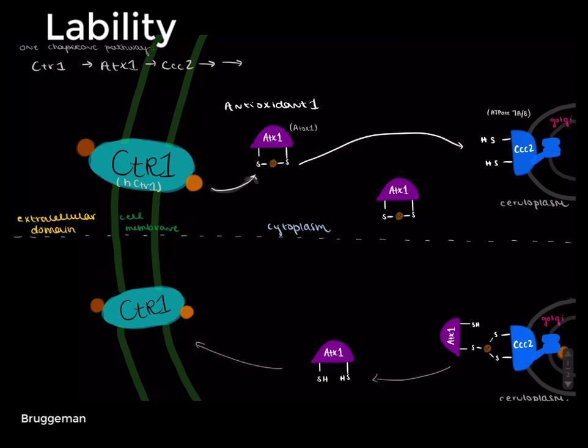When the copper 1 enters the cell through CTR1, the copper chaperone complex binds and transports the copper through the cell to the metal's next binding site.